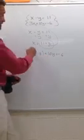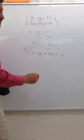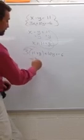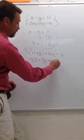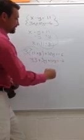So we can solve this equation for y. We're going to use some distributive property. 33 plus 3y plus 10y equals negative 6.